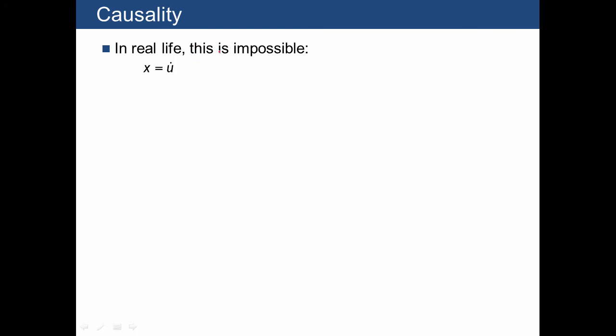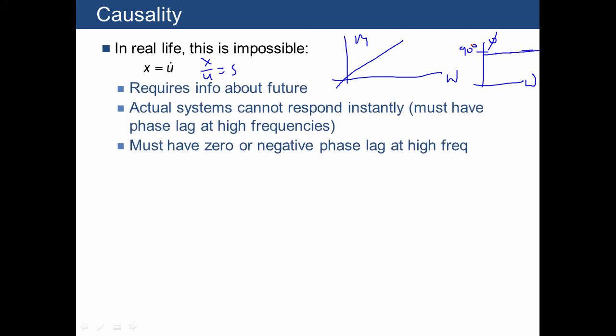Next let's consider the issue of causality, which says that this differential equation is actually impossible. The transfer function is s, and so it has more zeros than poles. And if you were to plot the Bode plot, it would look something like this, and the phase would be 90 degrees for all frequencies. This is impossible because, first of all, a pure derivative requires information about the future. Actual systems can't respond instantly, and so they must have a zero or negative phase lag at high frequency. This is just a reality about any kind of system in real life.